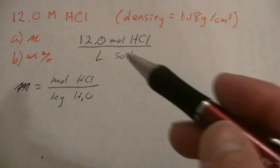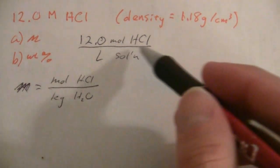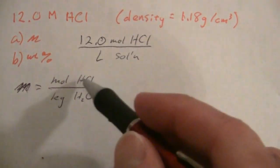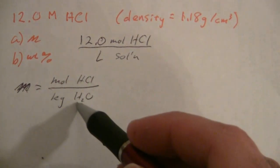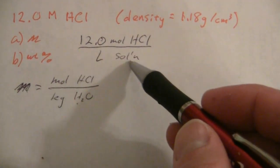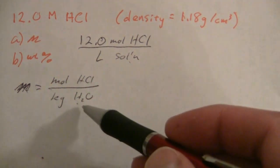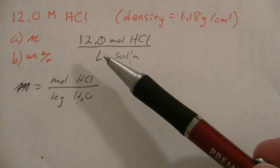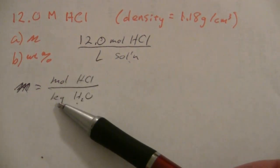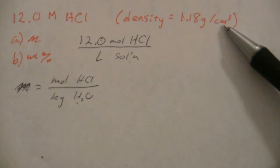All right, so here you'll notice now I have moles of HCl. That part's fine, but I need kilograms of water and I have liters of solution. So the first thing we need to recognize is in order to go from volume to mass units I need density.